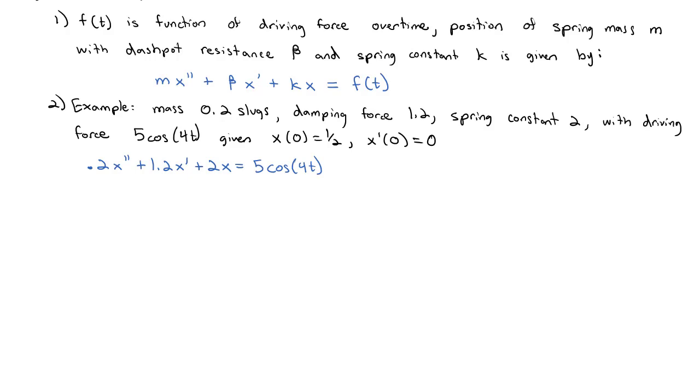This becomes what we solved in our non-homogeneous, higher-ordered, linear differential equations with constant coefficients. We already know how to solve these. To make the math easier, I'm just going to multiply both sides by 5, gets rid of the decimals, to get x'' + 6x' + 10x = 25cos(4t).